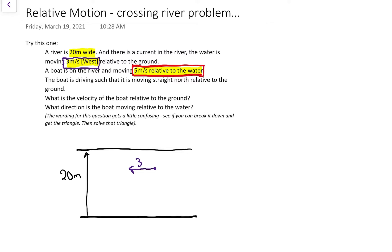Keep on reading and it says that the boat is driving such that it is moving straight north relative to the ground. So that means someone standing over here on the ground watching all this happen, they see the boat moving straight north. That's sort of like the camera view from above when I was doing all those early relative motion videos with the whiteboard and the toy cart.